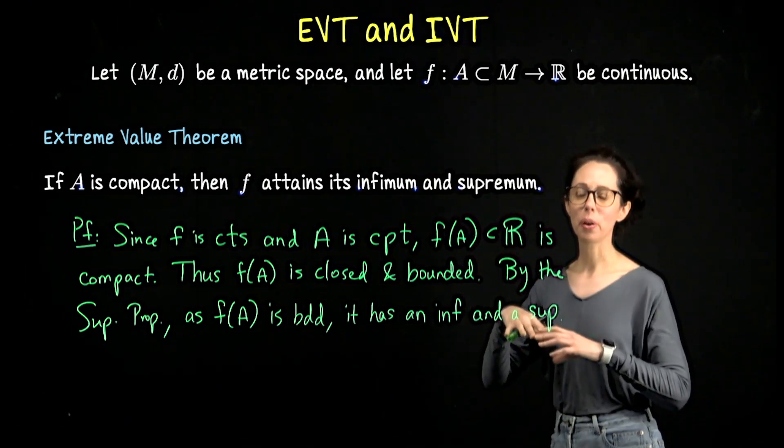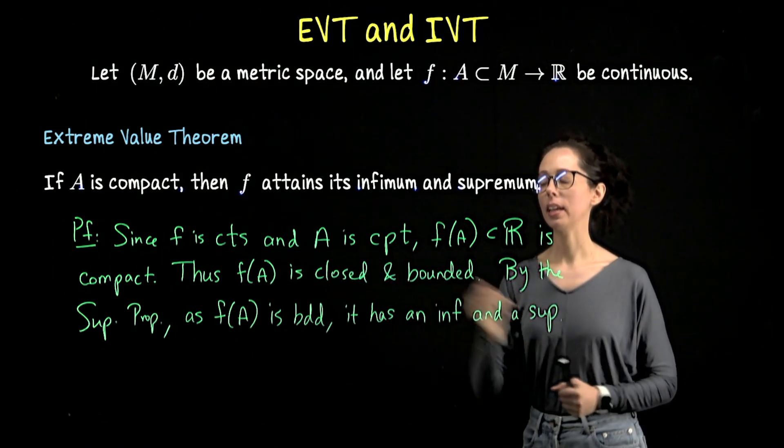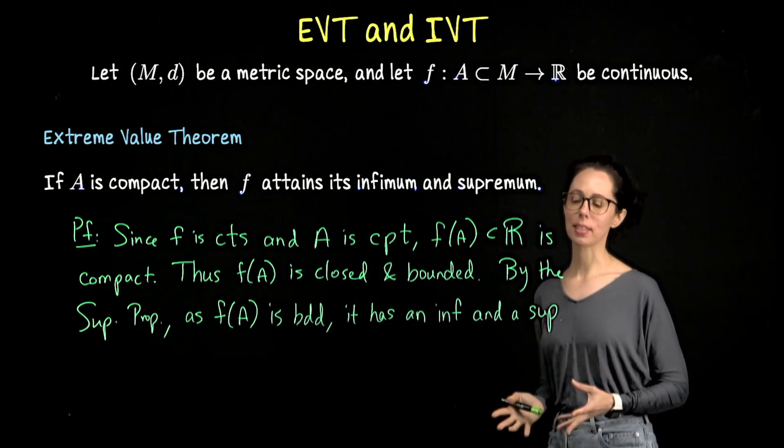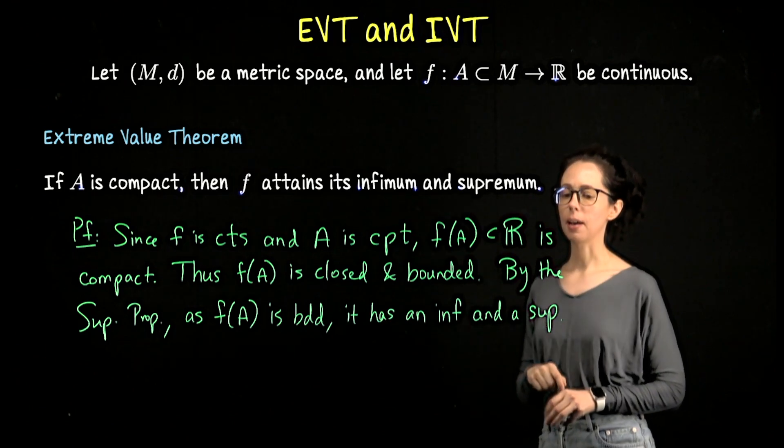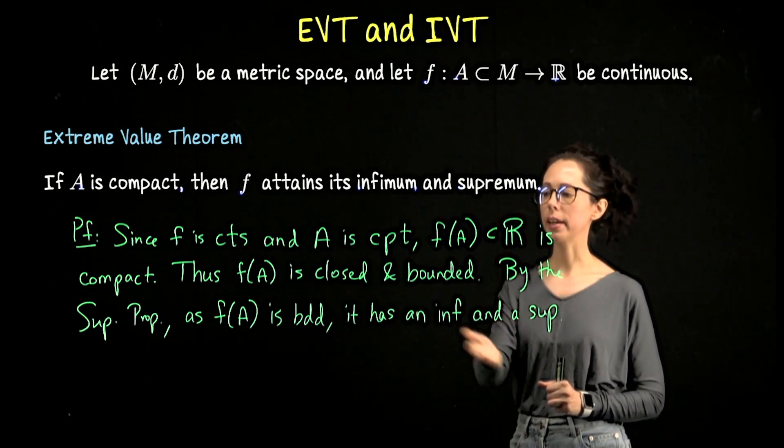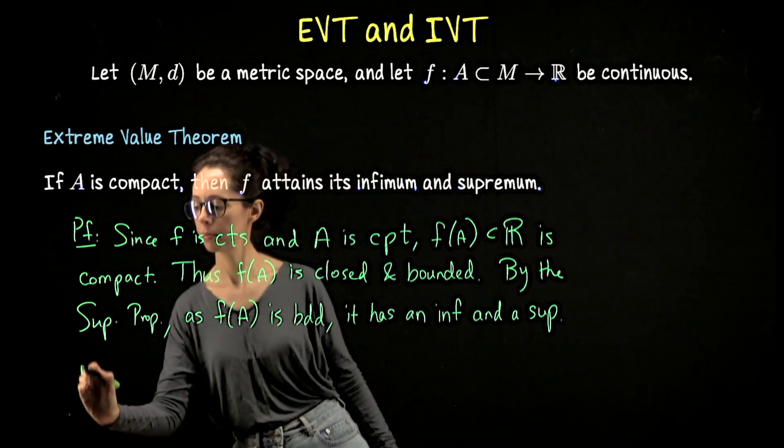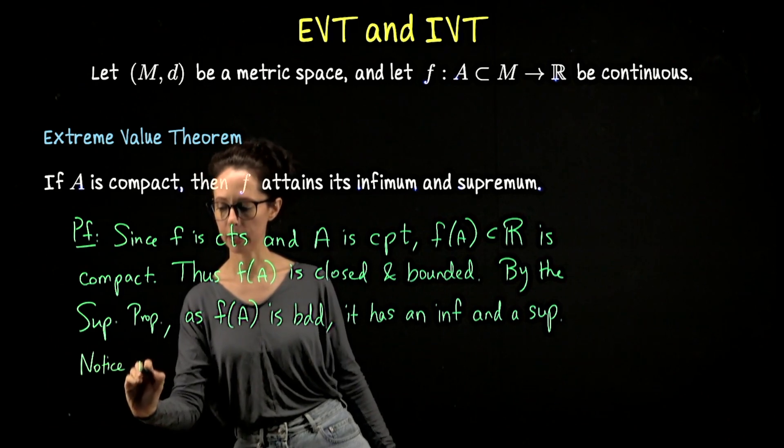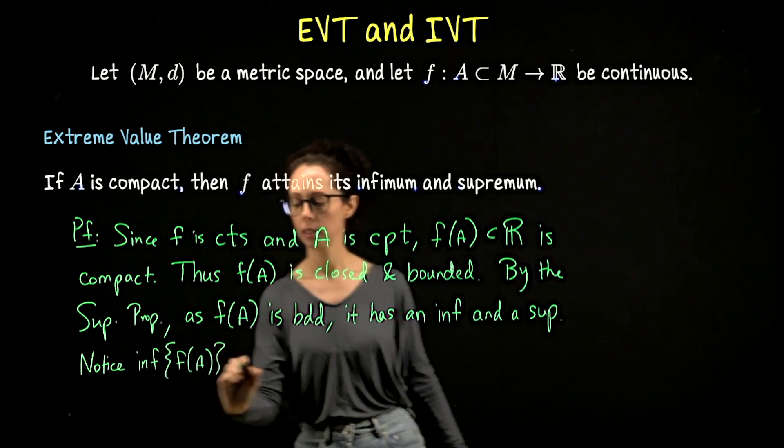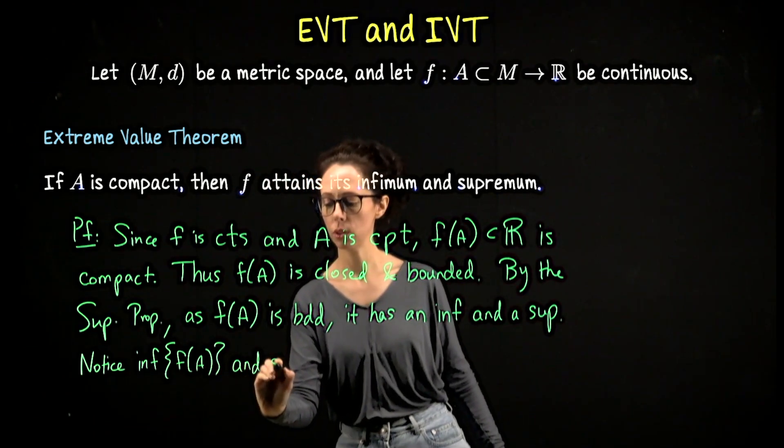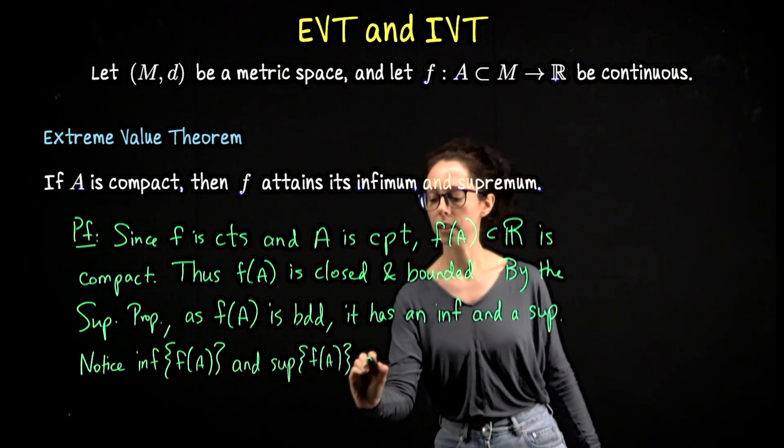It has an inf and a sup. We have the existence of these two. We need to show that they are in the set. Boundedness gave us the existence. The fact that f(A) is closed will put them in the set. Let me write out a very fast argument for that. Infimums and supremums are in the closure of a set.